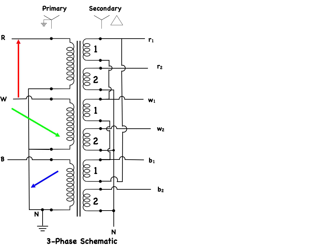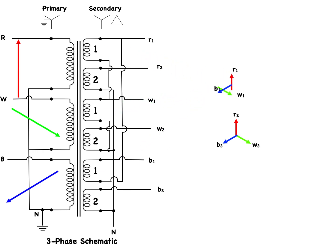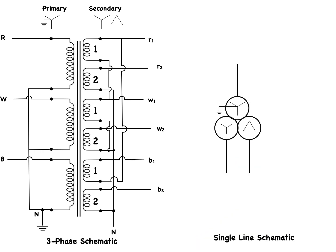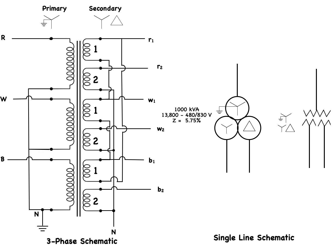Because of the Y connection and the balanced three-phase system, the primary phase-to-neutral voltages will be equal in magnitude but 120 degrees apart. Because the transformer primaries are magnetically linked to each of the two secondaries, the secondary voltages will be in phase with their primary counterparts — for example, the red phase secondaries will look like this. The single-line schematic will look like this, or in alternative forms. The info block shows the KVA reading, line-to-line voltages for both primary and the two secondary voltages, and transformer impedance of 5.75%. This is known as a star-star-delta, or Y-Y-delta, configuration.